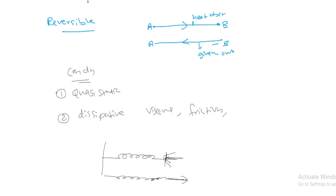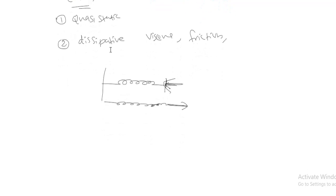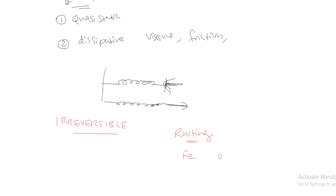The opposite of a reversible process is an irreversible process. If a process is not reversible, it is irreversible. All natural processes are irreversible in nature. An example is the rusting of iron — iron converting to iron oxide is a chemical change.